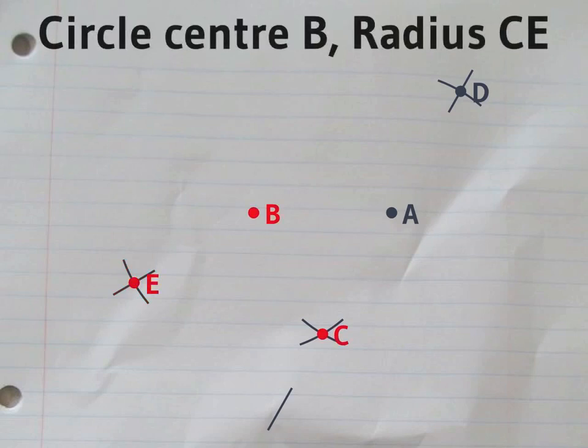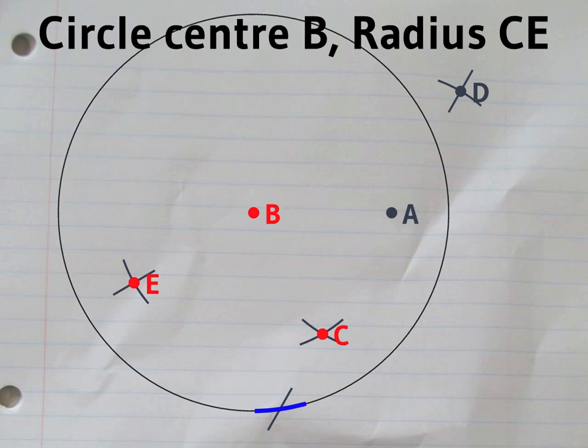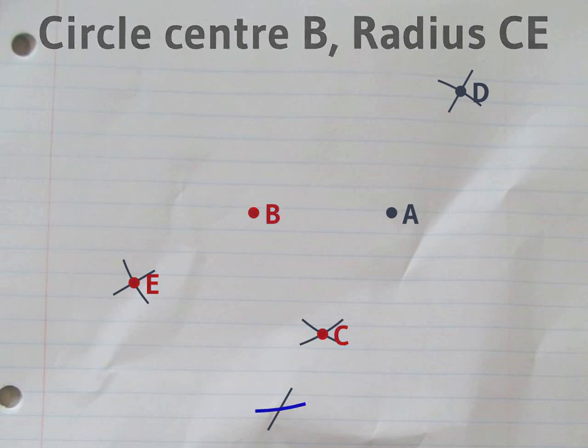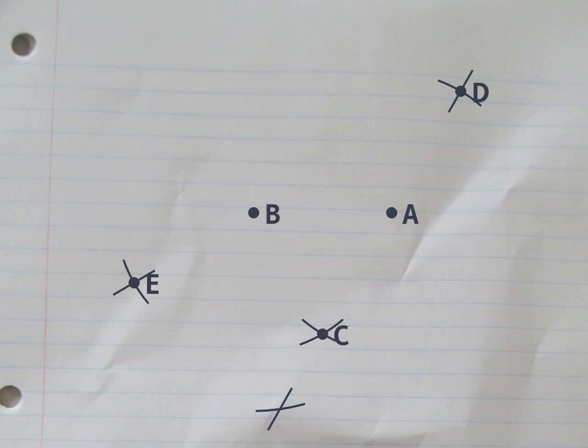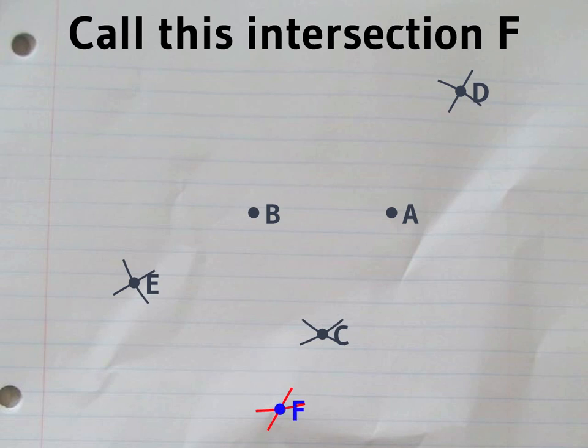Set the compass to the distance between C and E, and draw another circle centered on B. This circle meets the first straight line at a point called F.